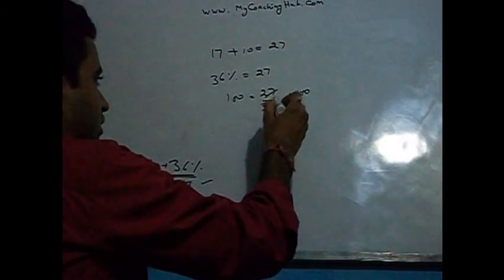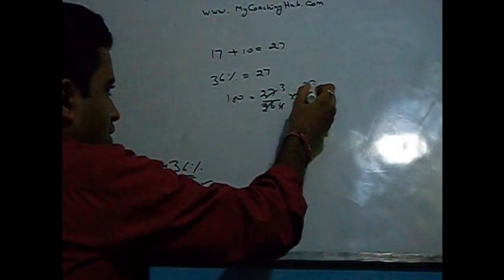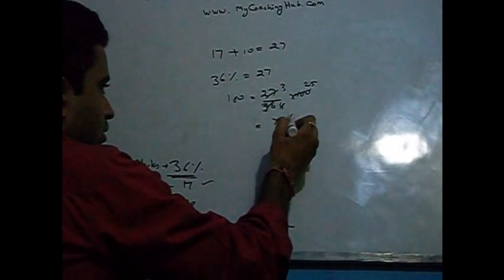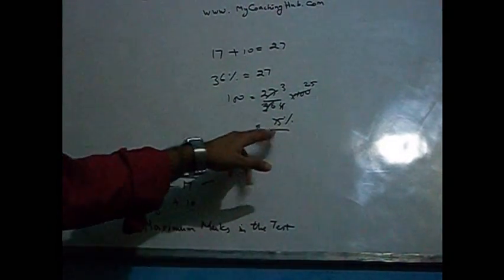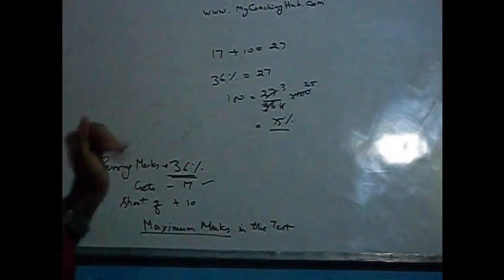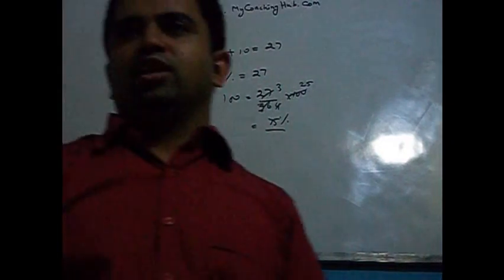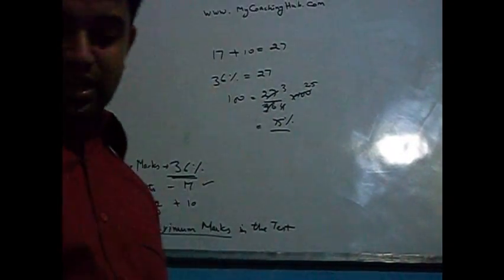So 75 marks are the maximum marks in the test. The person got less than that and that's why he failed. Let us take another example.